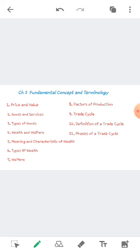In economics, different words do not have the same meaning — they are not synonyms. All words have different definitions. Just like growth and development: generally we use both words in the same manner, but in economics, the definition of development is different from growth. Similarly, the basic terminologies of this chapter include price and value, goods and services, types of goods, wealth and welfare, characteristics of wealth, types of wealth, welfare, factors of production, and trade cycle.